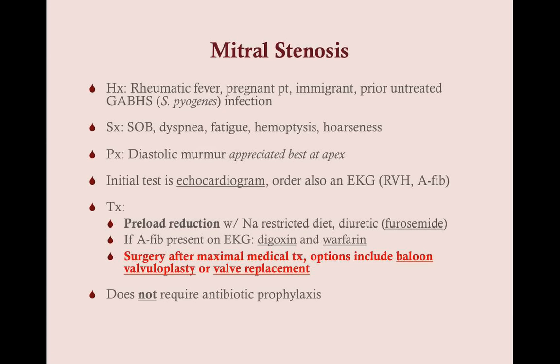Treatment for mitral stenosis is preload reduction. With any diastolic murmur, give the patient diuretics — remember: diastolic murmur equals diuretics. We give a sodium-restricted diet and diuretics, typically furosemide (Lasix). If atrial fibrillation is present on EKG, add digoxin — not for its positive inotrope properties, but as an antiarrhythmic particularly useful for atrial fibrillation — and warfarin, because patients with afib are at risk for developing clots.